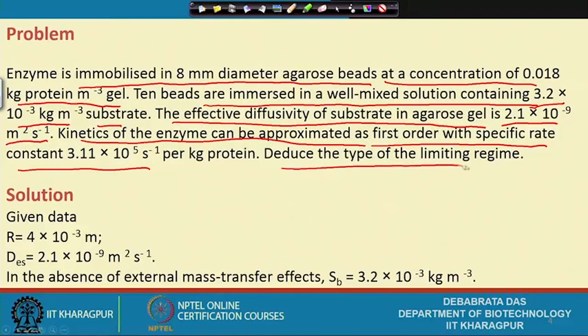We need to deduce the type of limiting regime — whether it is mass transfer limited or reaction rate controlling — from the given data.